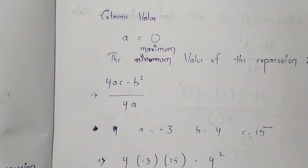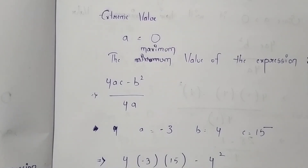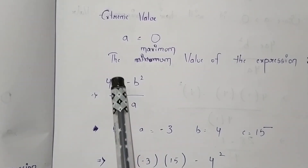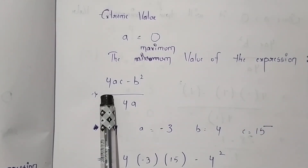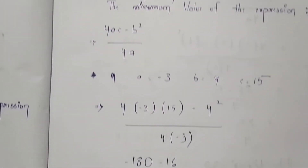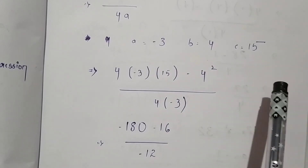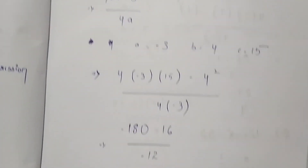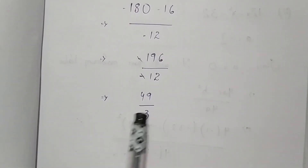From the given equation, the value of a is -3, which is negative. Therefore, the expression will have a maximum value. The maximum value is found using the formula (4ac - b²) / 4a. Here a is -3, b is 4, and c is 15. On substituting these values, we get the maximum value as 49/3. Thank you.